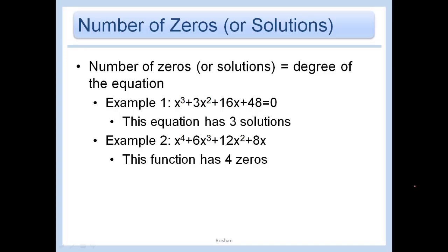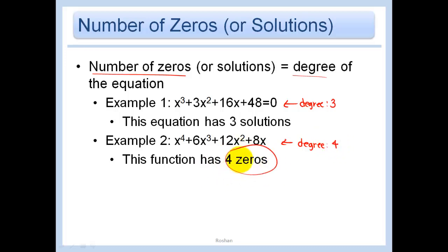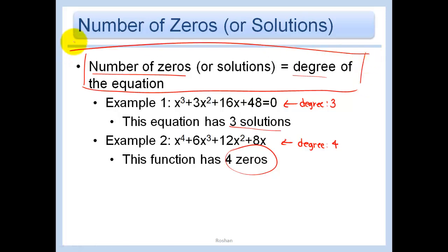As we've been seeing in the last couple of sections, the number of zeros equals the degree of the equation. For example, x cubed plus 3x squared plus 16x plus 48 has degree 3, so it has 3 solutions. And x to the 4th has degree 4, so it has 4 zeros. The degree of the equation tells you how many zeros you have.